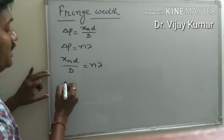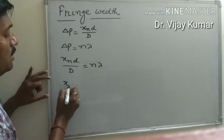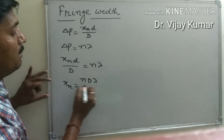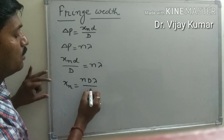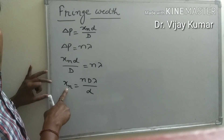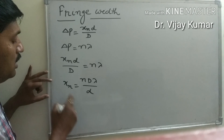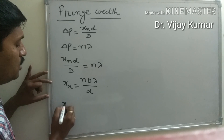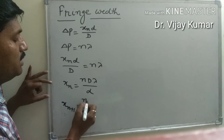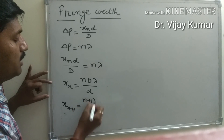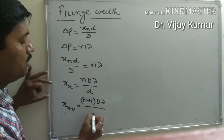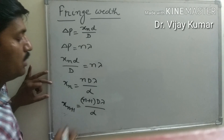And xn becomes n·D·lambda upon d. Here xn represents the position of the nth bright fringe. The position of the (n+1)th bright fringe is given by (n+1)·D·lambda upon d.